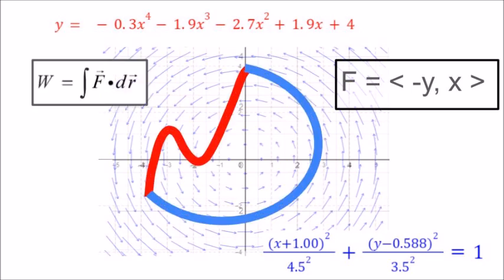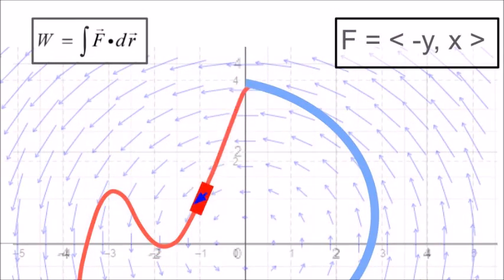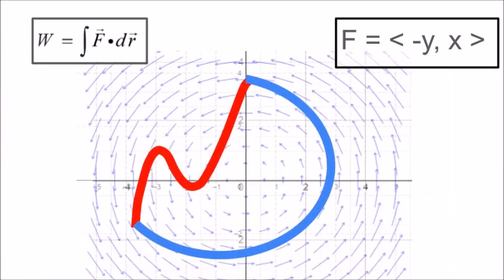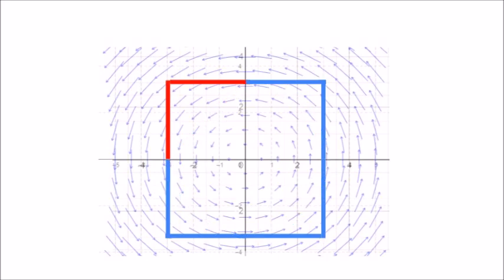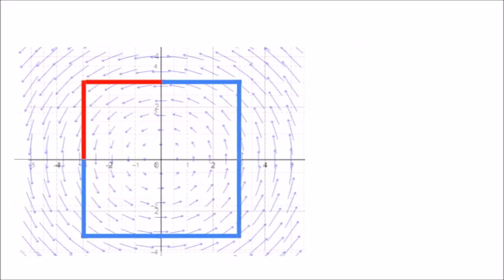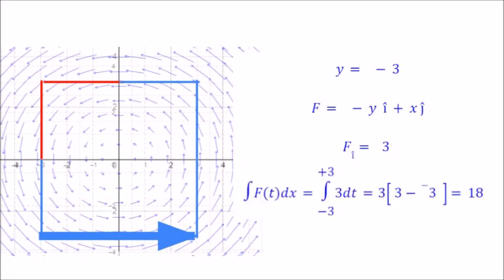Sounds like a joke, but our goal here is to move along the curve, taking dot products with the field, which is a bit complex. So we'll start with a simpler shape. Everywhere on this side, y equals negative 3, meaning our whirlpool field is 3i. Integrated from negative 3 to 3, that's positive 18 — positive, going with the flow.